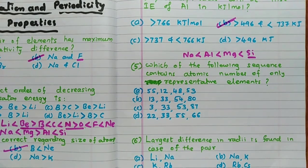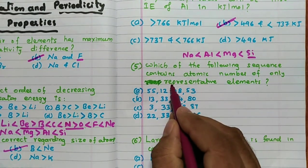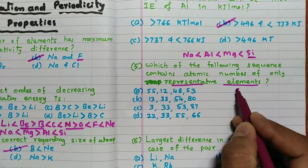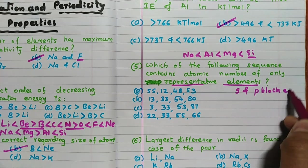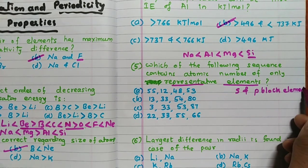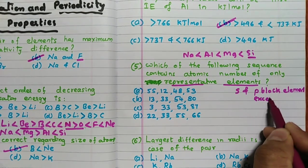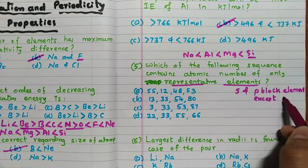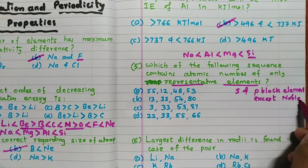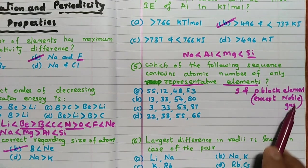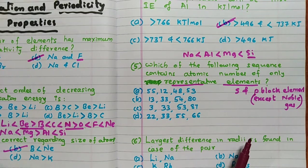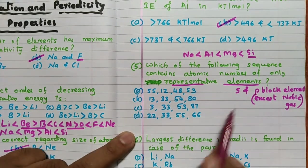Question five: which sequence contains atomic numbers of only representative elements? Representative elements are S and P block elements, except noble gases. S and P block elements, except noble gases, are called representative elements. Now you have to identify which sequence satisfies this.